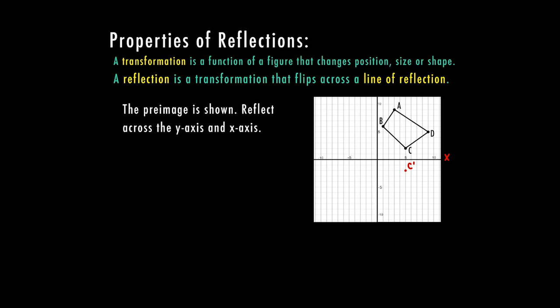Then I do the same thing with D — it's five from the x-axis, so I put it five away on the other side. My B is six from the x, so I go six in the opposite direction. Then my A is nine away, so I stay on the same x-value and go down nine. Now my new image has reflected over the x-axis.